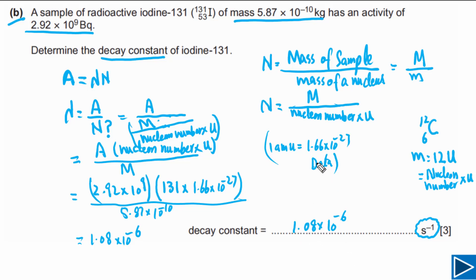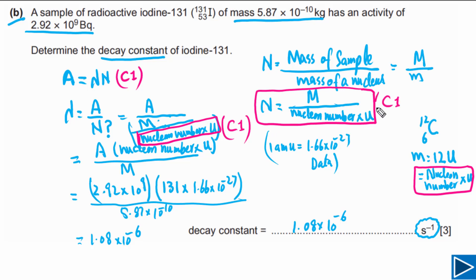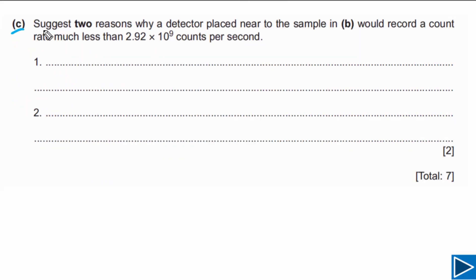This question has three marks. The first mark is for writing the formula A = λN. The second mark is for correctly identifying that the mass of one nucleus equals nuclear number times u, showing how to calculate N. The third mark is the answer mark for obtaining the correct value. For Part C, the question asks us to suggest two reasons why a detector placed near the sample records a count rate much less than 2.92×10⁹ counts per second.